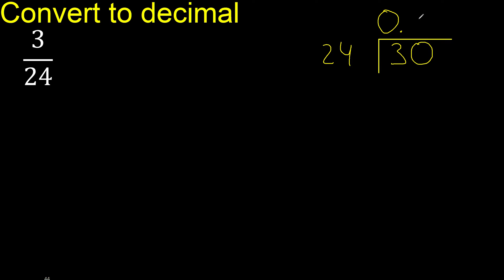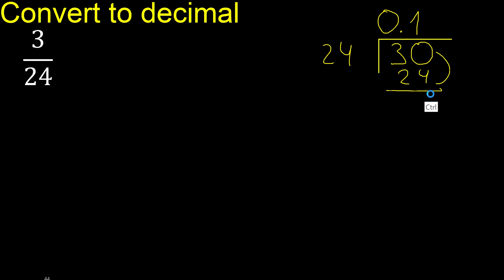24 multiplied by 2 is 48, which is excessive. 24 multiplied by 1 is 24, the nearest number. We subtract: 30 minus 24 is 6. There is no number that goes down, so complete with 0. The point is here. Bring down to get 60.